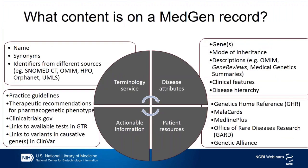Each MedGen record has a disease name. The preferred name is from SNOMED CT, which is the source of disease names most electronic medical records use, so it should facilitate incorporation in clinical settings. You will also see other attributes of the disease, such as alternate names from different sources with their identifiers — again, the purpose being to easily integrate MedGen in electronic medical systems in your hospital or clinic. You can see causative genes, mode of inheritance, and disease descriptions along with the list of clinical features.